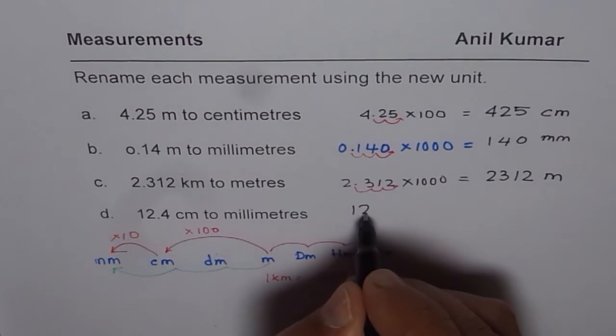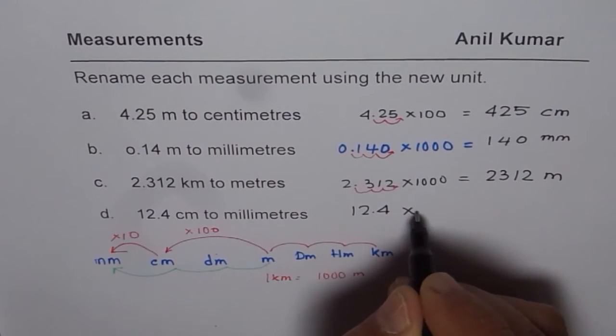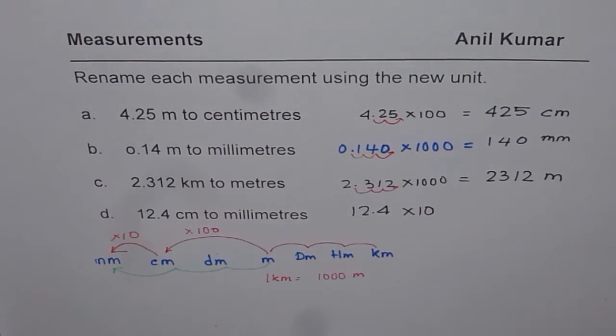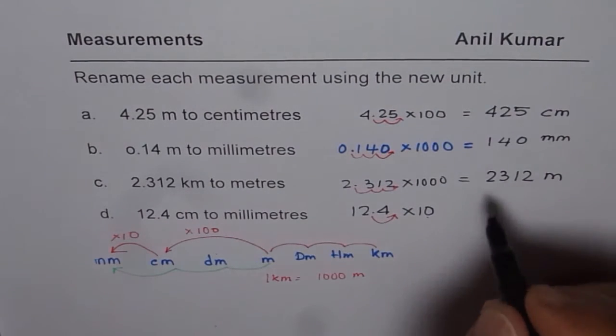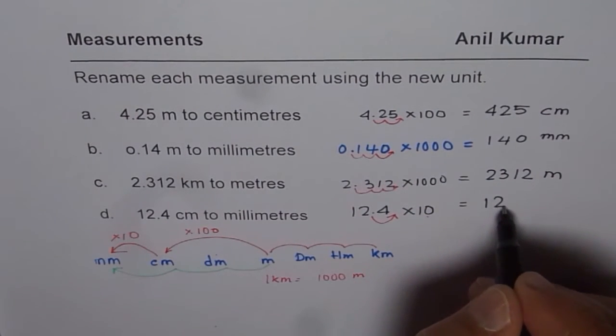We have 12.4 times 10. That means the decimal moves one place to the right. So we get 124 millimeters.